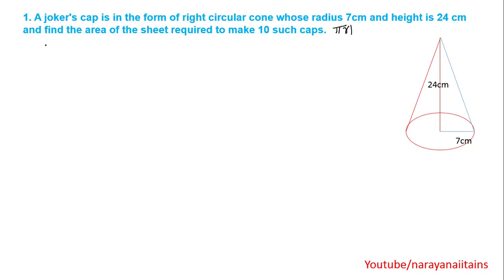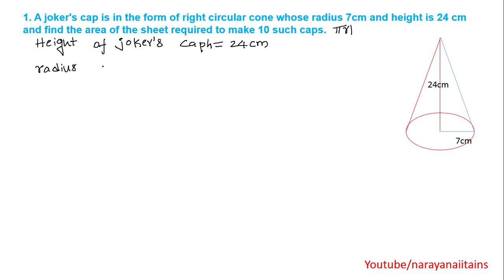It is very important. Height of the joker's cap is given as 24 cm, so h = 24. Radius of the joker's cap R = 7 cm. So, we should find the surface area of the cone. The formula is pi r l. R is given as 7 cm, but L is not given. L means slant height — we need to find the slant height.